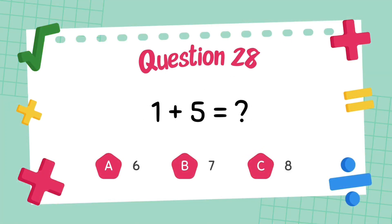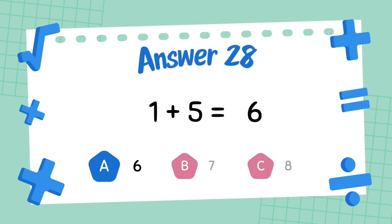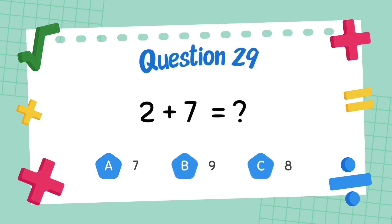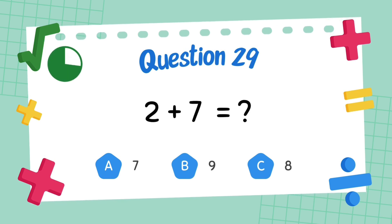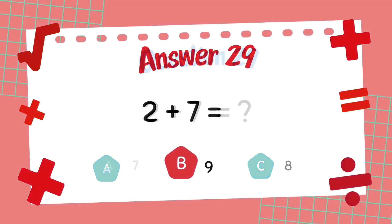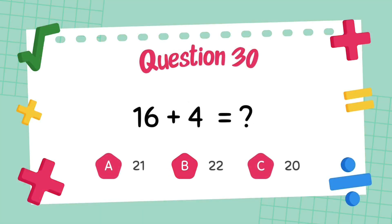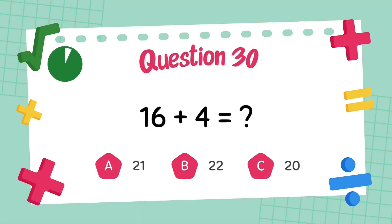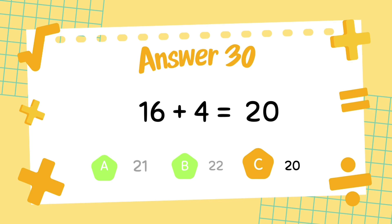What is 16 plus 5? The answer is 6. What is 2 plus 7? The answer is 9. What is 16 plus 4? The answer is 20.